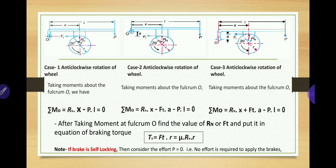One more thing to remember: if the brake is self-locking as given in the problem, then effort P is equal to zero. Self-locking means no effort is required to apply the brake. In the moment formula, the P × L term becomes zero. Remember this note.